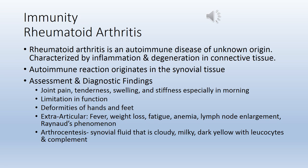Rheumatoid arthritis is a systemic disease with multiple extra-articular features, most commonly fever, weight loss, fatigue, anemia, lymph node enlargement, and Raynaud's phenomenon — a cold and stress-induced vasospasm causing episodes of digital blanching or cyanosis. The history and physical examination focuses on bilateral and symmetrical stiffness, tenderness, swelling, and temperature changes in the joints. Arthrocentesis shows synovial fluid that is cloudy, milky, or dark yellow and contains numerous inflammatory components such as leukocytes and complement.